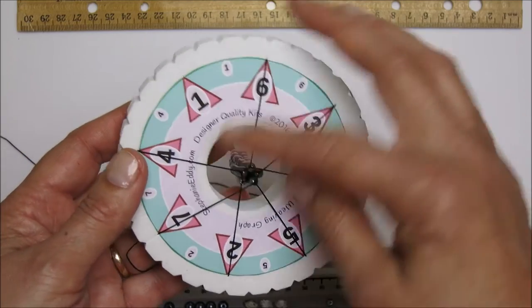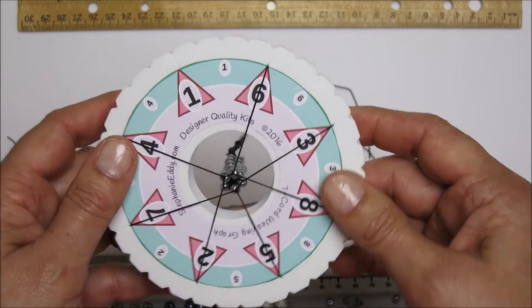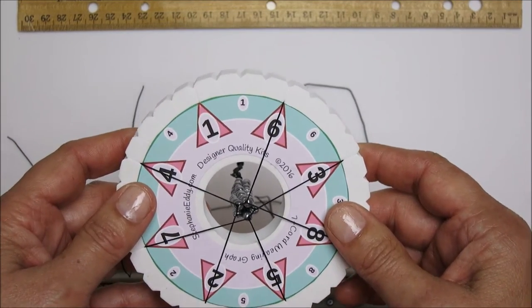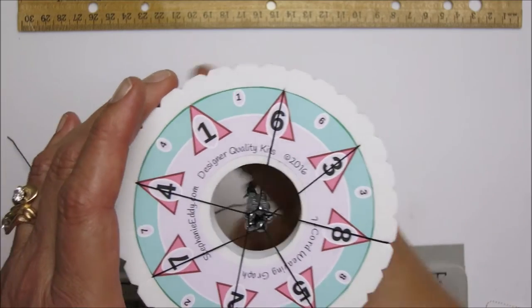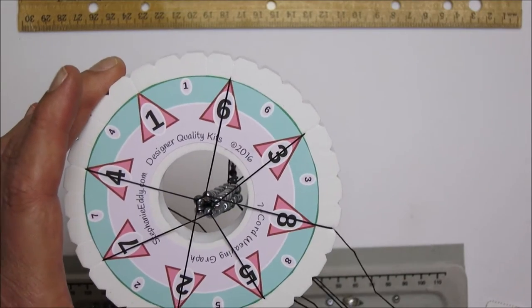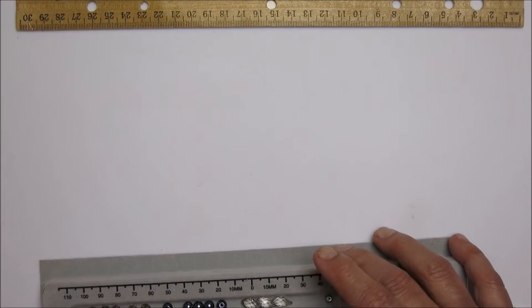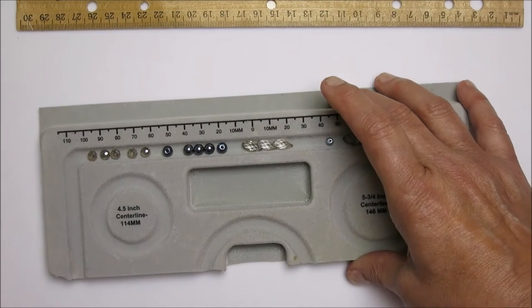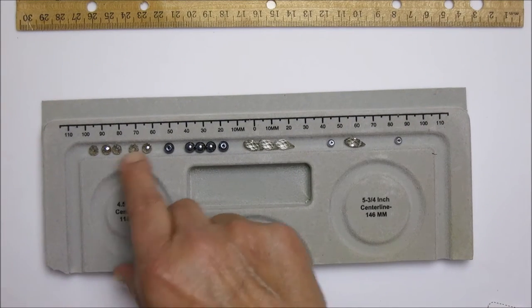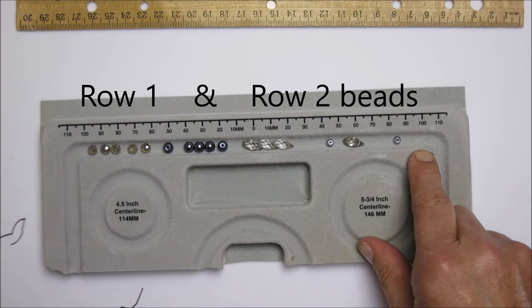Alright, so we've gone all the way around. We've finished off our fours. So now what I'm going to do is follow my chart that you'll have in your kit and add these beads on one at a time. What I like to do is actually set them out in some type of a tray so that they're in the order of my pattern.